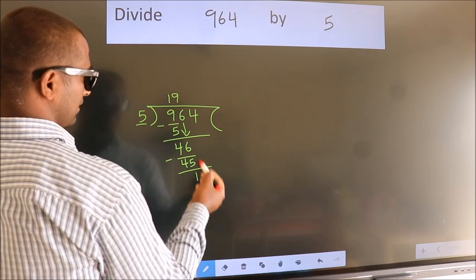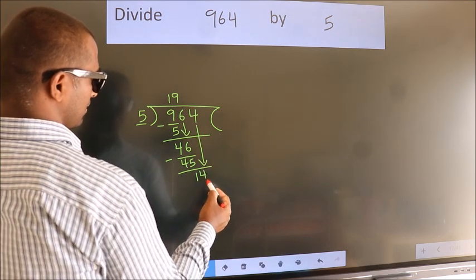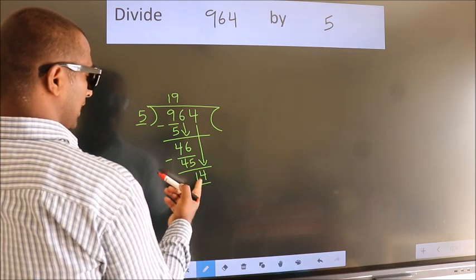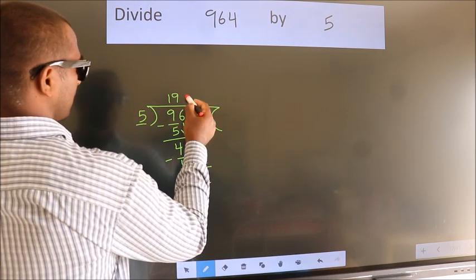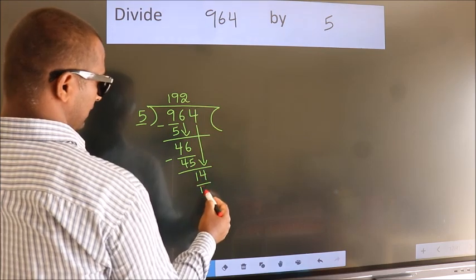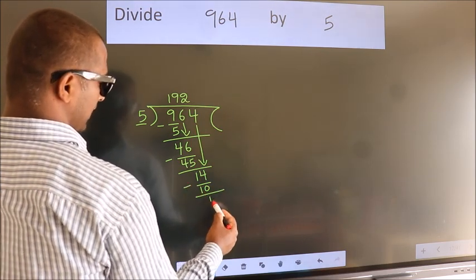After this, bring down the beside number. So 4 down. So 14. A number close to 14 in 5 table is 5 twos 10. Now we subtract. We get 4.